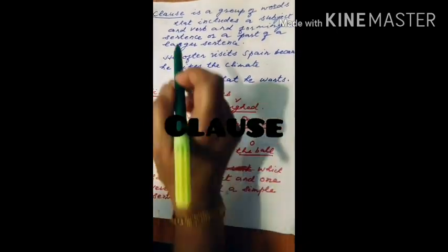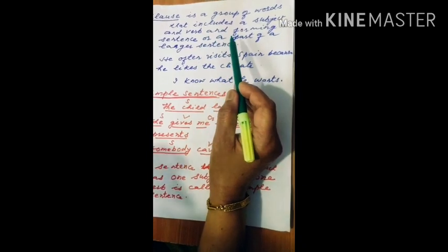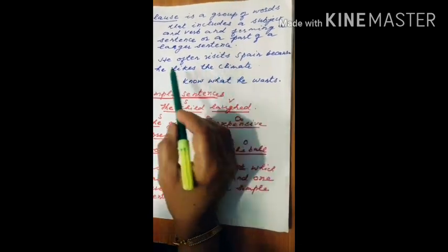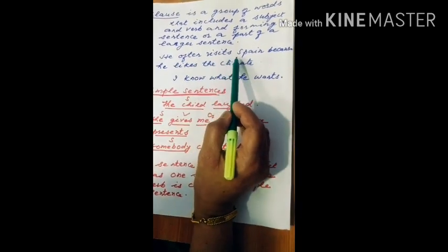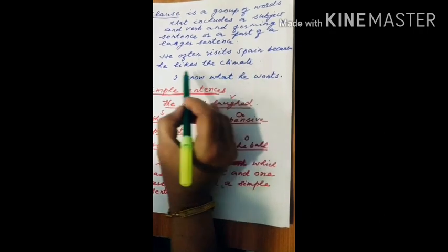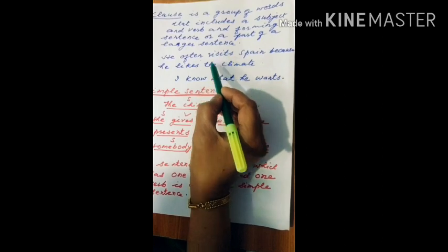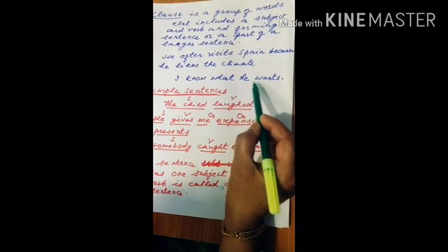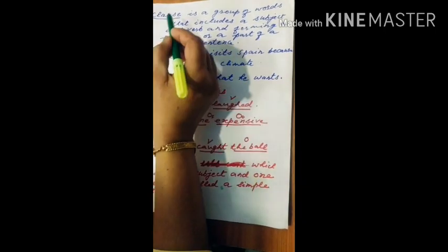Now, clause. A clause is a group of words which has a subject and verb and it forms a sentence or a part of a larger sentence. For example: 'He often visits Spain because he likes the climate.' Here, 'he often visits Spain' is one part and 'he likes the climate' is another part, and the whole is a sentence containing two clauses. In 'I know what he wants,' 'I know' is one part and 'he wants' is another. Here, 'because' and 'what' are conjunctions.